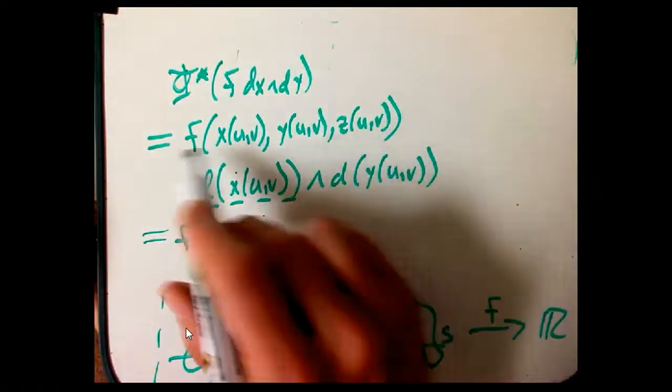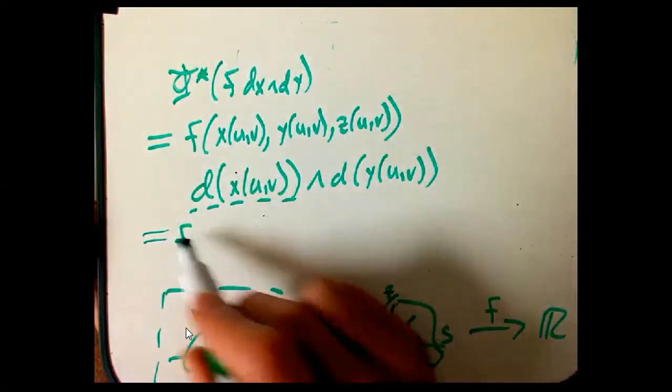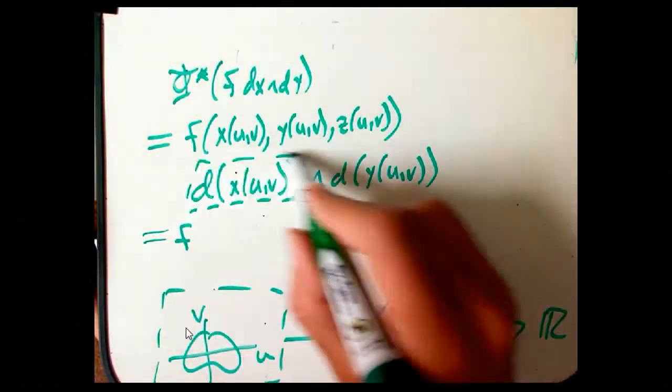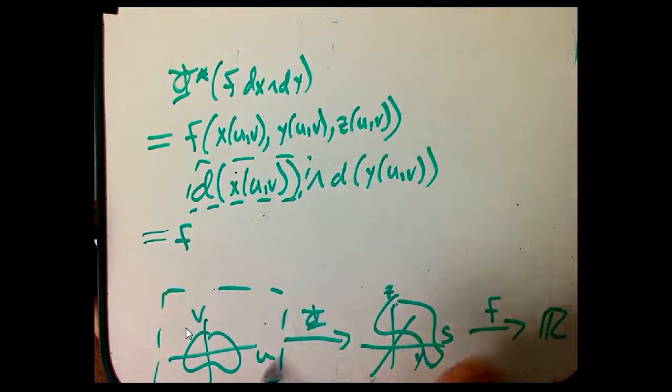Well, let's just abbreviate this back as f again. And we'll just remember that it's supposed to be in terms of u and v. And then what we want to do is expand out this d. We know we have a definition for d of a function. Now remember this is in R².